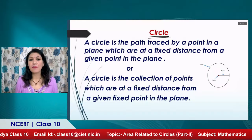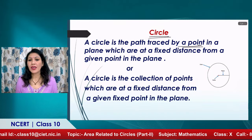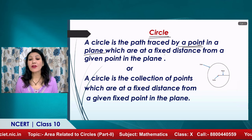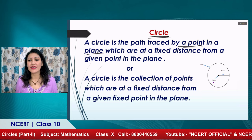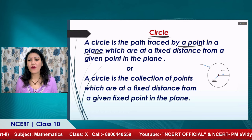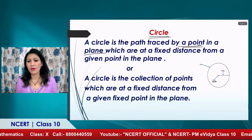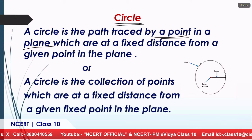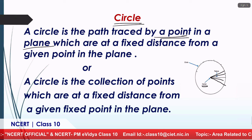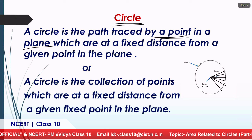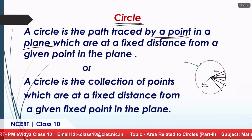Let us once again recall what a circle is. A circle is the path traced by a point in a plane that is at a fixed distance from a given point. Here in the figure, we can see a fixed point known as the center of the circle. If there are infinite points all at an equal distance from this center, then the shape formed is known as a circle.